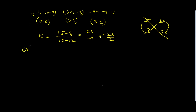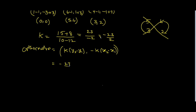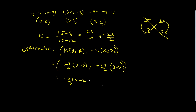The orthocentre formula is k into (y2 minus y1) comma minus k into (x2 minus x1). The k value is minus 23/2 into (y2 minus y1) that is (2 minus 4) = minus 2, comma minus k into (x2 minus x1) that is (3 minus 5) = minus 2. That gives minus 23/2 into minus 2 = 23, comma minus 23/2 into minus 2 = minus 23.